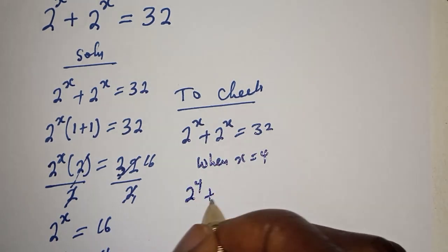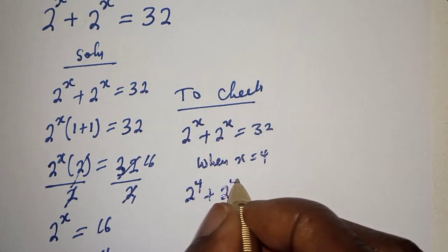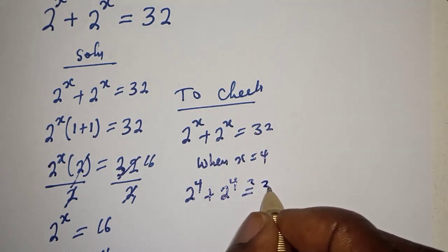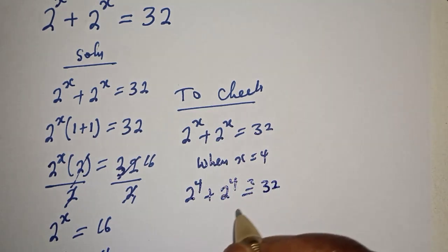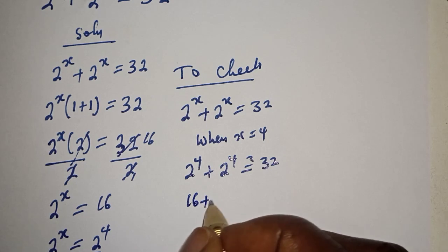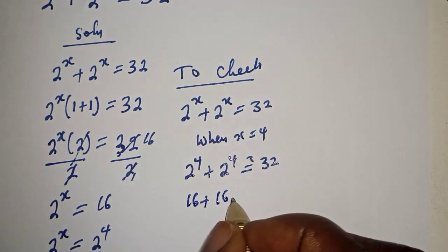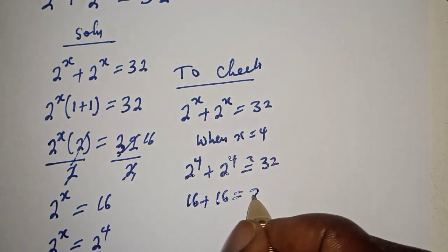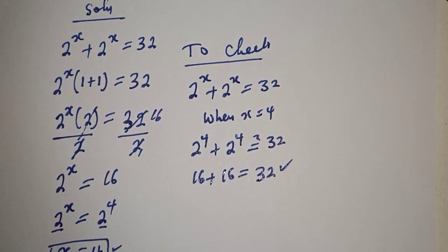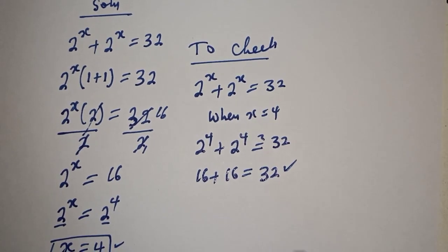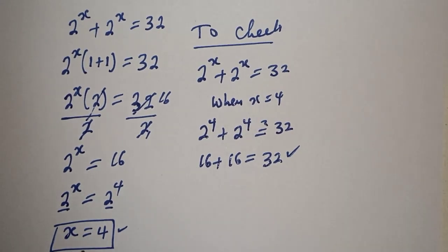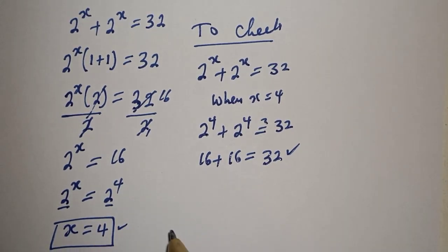2 raised to power 4 plus 2 raised to power 4 must be equal to 32. 2 raised to power 4 is 16, and 16 plus 16 equals 32, which satisfies the given equation at s equal to 4.